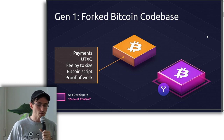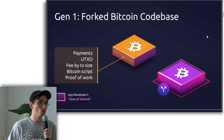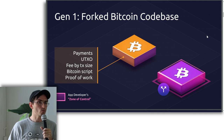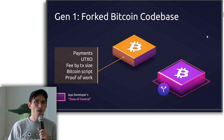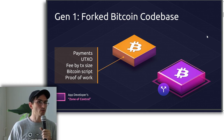People tried to use scripting and something called colored coins, sort of shoving metadata or contextual data into the call data field and parsing that as if it was relevant to your application. This was also a really terrible experience. You have Bitcoin doing one thing really well, but as soon as you want to do something else, it gets really difficult.